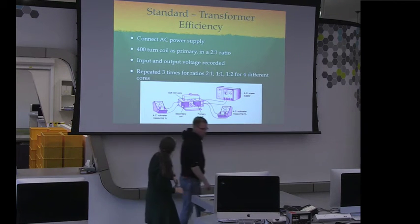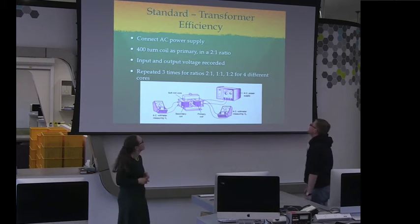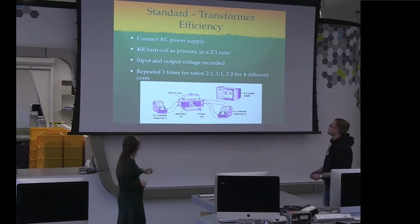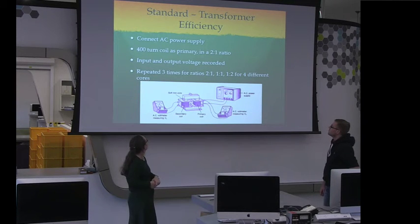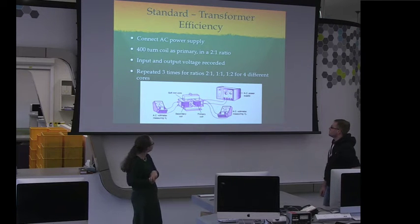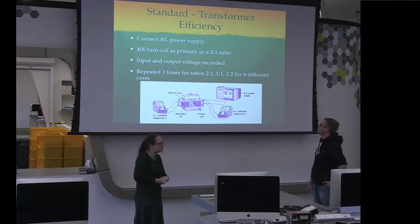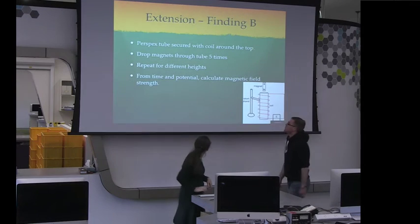And then our standard goal was with the transformer efficiency in this transformer here. So we connected the AC power supply. We had 400 turn coil in a 2 to 1 ratio. The input and output voltages got recorded and we repeated three times for the ratios 2 to 1, 1 to 1, 1 to 2. And we put different cores into our transformer and saw what happened with the different cores to see if that material had a bit of an effect.